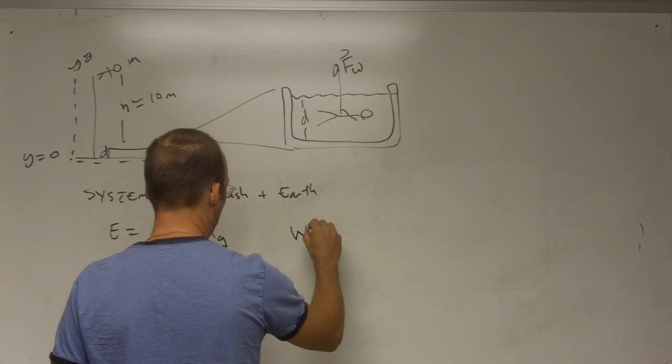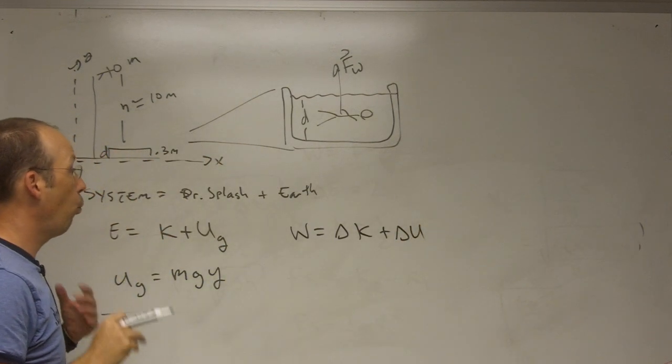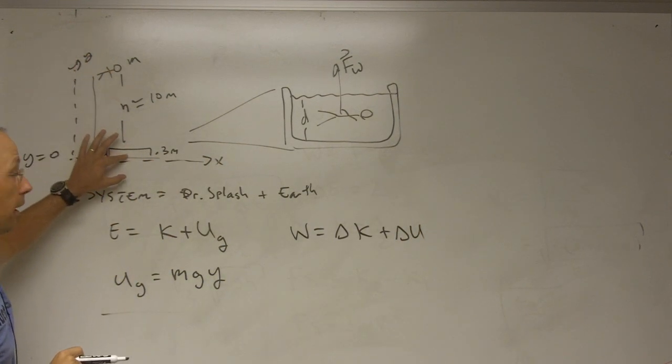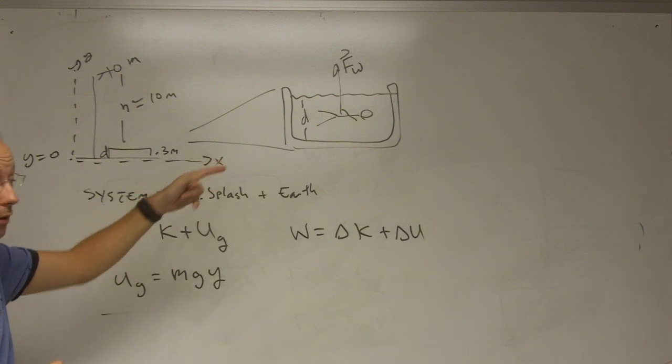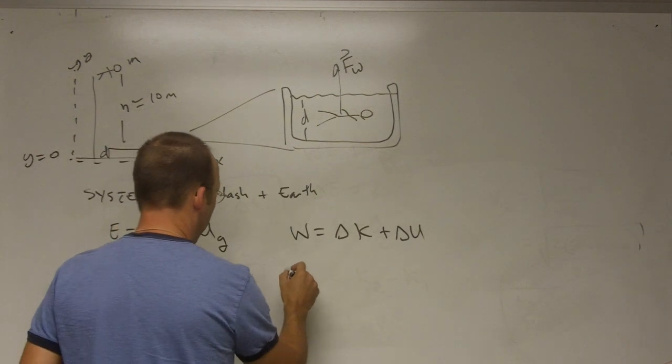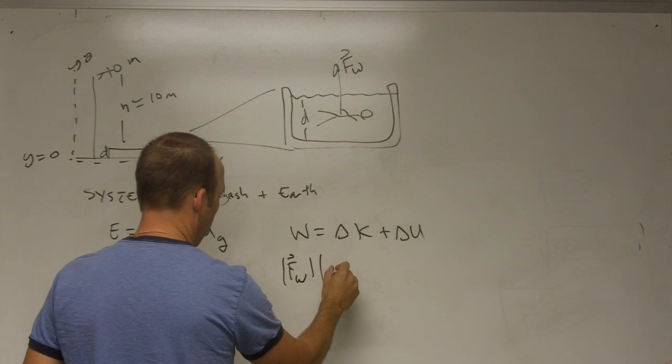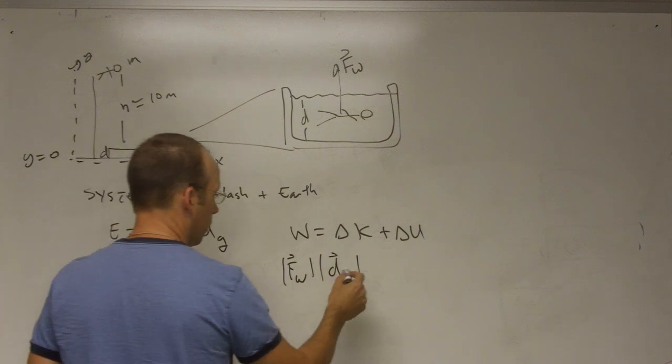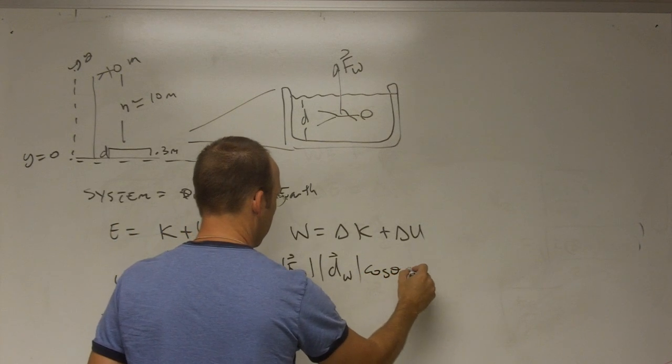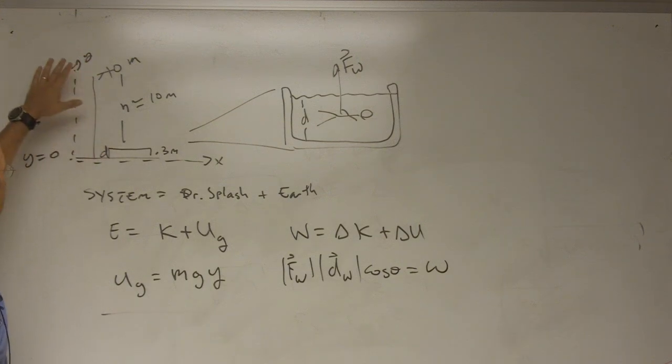Okay, so work equals change in kinetic plus change in potential. And he's going from here to there. This is position one and position two. So what does work? Well the water does work and that's it. So we're going to have F water, magnitude, D water, the displacement in the water, times cosine theta. And that's the work.